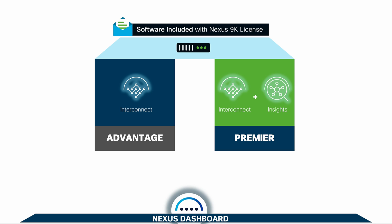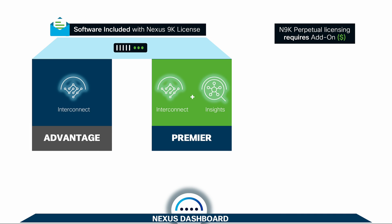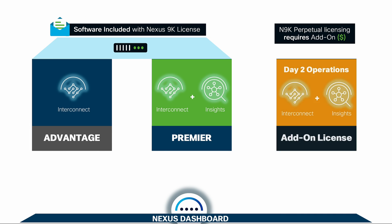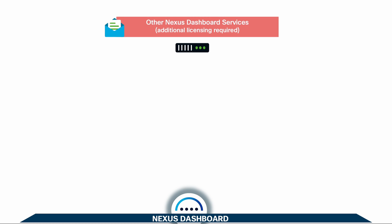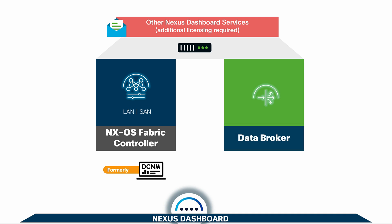We will go through all of these as we cover them in the series. If you use a perpetual licensing model instead, you can still get Nexus Dashboard through some add-on options. There may be other services in Nexus Dashboard that follow additional licensing rules, such as fabric automation for NXOS environments — previously known as DCNM — or Data Broker, which might be useful for network tapping.